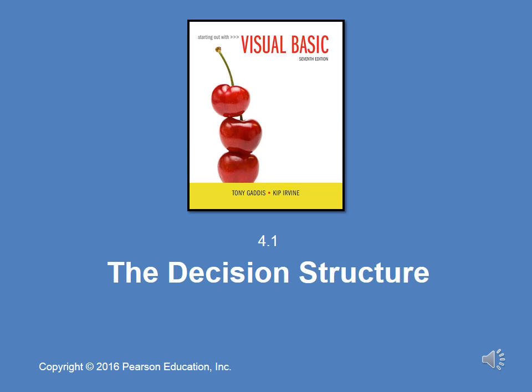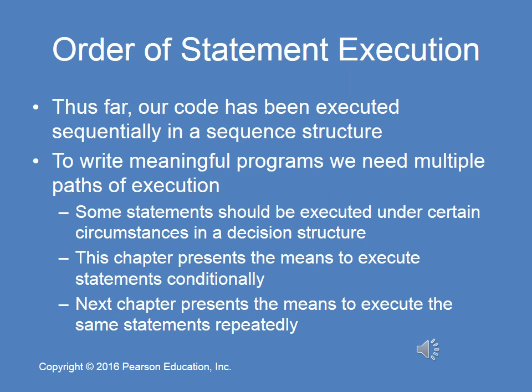Any decision structure in a programming language gives us the ability to deviate from a linear flow of control. Up until this point, everything has been linear. Line 14 was always executed after line 13 and before line 15. With the introduction of decision structures, that will change. In Chapter 4, we will cover the branch, and in the next chapter, we will cover the loop — two alternate flow of control structures.